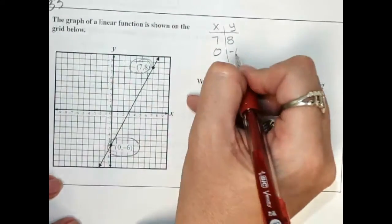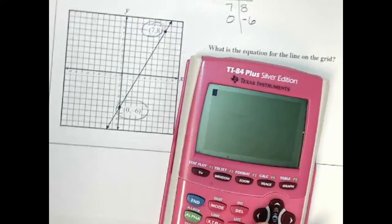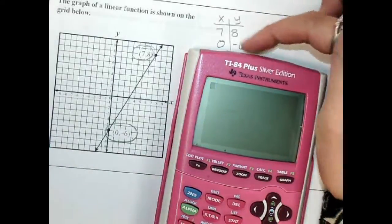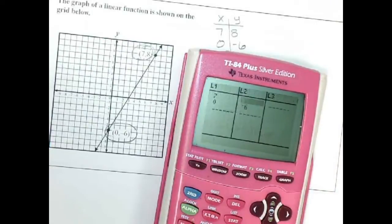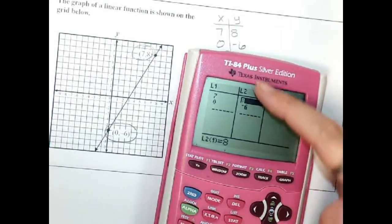So I'm going to type that in my calculator. I can use this even though I made my own table. Remember we hit stat, edit, and I typed in my points there just like I have up here.